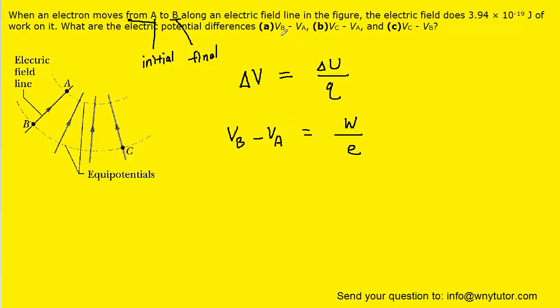And that's kind of convenient because part A is asking us for the value of VB minus VA. So all we have to do is take the work done by the electric field, which was given to us in the question, and then divide by E, which again is that 1.6 times 10 to the minus 19th. And when we process that, we get approximately 2.46.